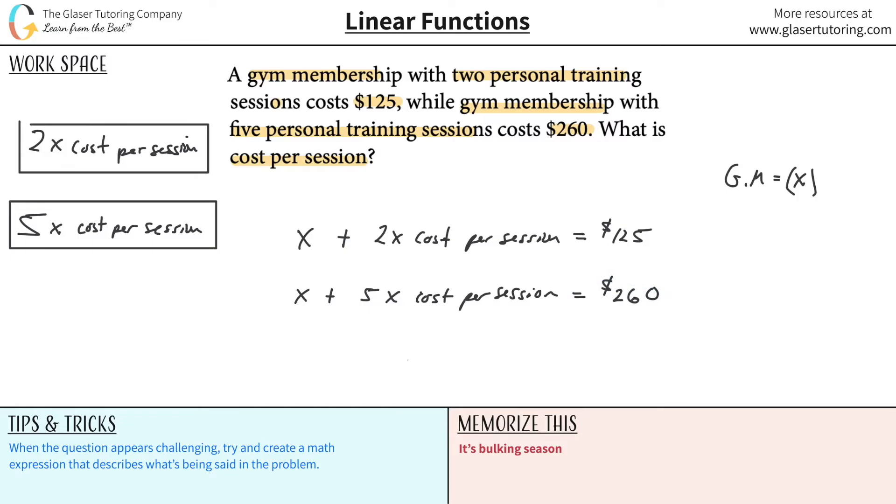Now you might say, well, this is a little cumbersome to work with. Cost per session. Why don't we call cost per session Y or something like that? So cost per session is equal to Y. Now what I'm going to do, literally erase cost per session. And I'm going to get rid of the multiplication sign because I don't want you to get confused with two X's there. So that would be just two times that cost per session or five times that cost per session.